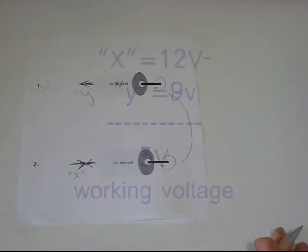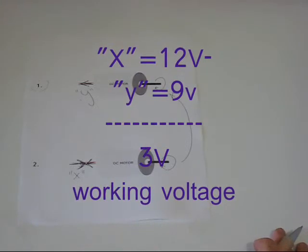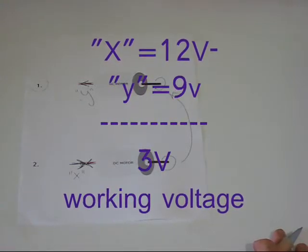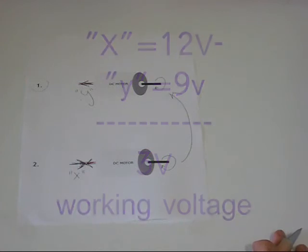So if, for example, X is 12 volts and Y is 9 volts, the working voltage on a motor will only be 3 volts. Y being the Back EMF.